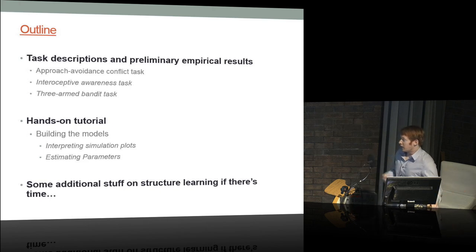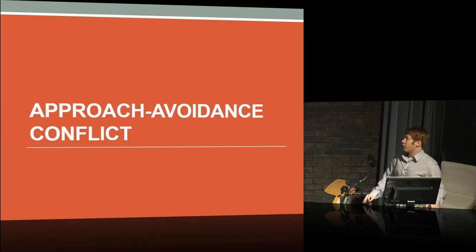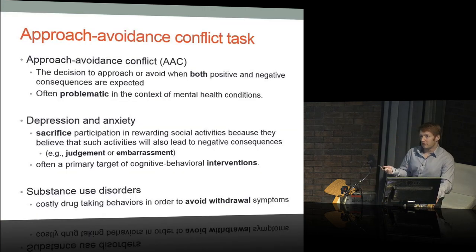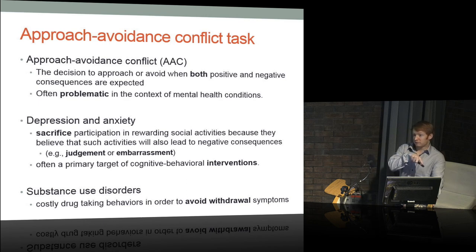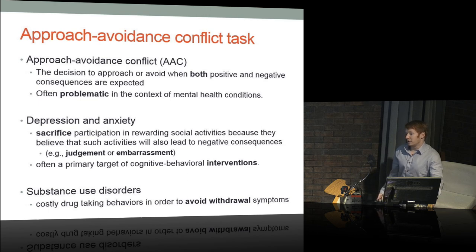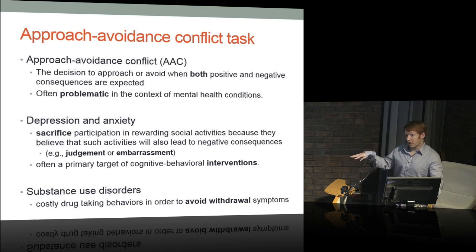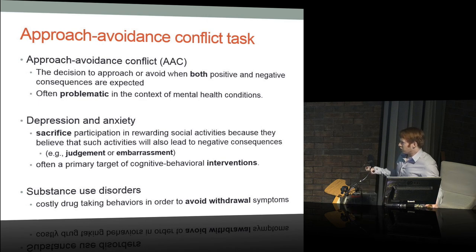We'll see what we get through — depends on how long some of this takes. So, approach-avoidance conflict: what is it? Basically this is something that's a big problem in psychopathology, especially in emotional disorders. A lot of times you have to choose to approach a situation when both some bad stuff and some good stuff will happen at the same time, or you can avoid the bad stuff and go do something safe — but that means you sacrifice a lot of the good stuff as well. In the context of anxiety and depression, you can end up sacrificing a lot of well-being-promoting activities in life due to a fear of not being able to handle possible negative outcomes.